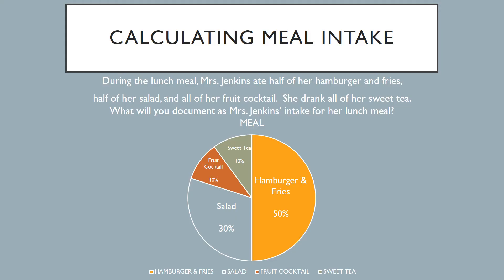You have to be really careful about the context of the question and especially the contents of the question. There are two variables that are important. One variable lies within the question itself — it's telling you the amount of the certain food item that the person ate. The second variable is the actual pie chart, which will tell you what percentage that food item accounts for of the entire meal.